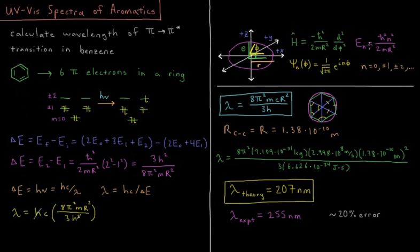And the energies of these levels were equal to Planck's constant squared times the quantum number n² over 2mr². And n, the quantum number, could equal any integer, 0, plus or minus 1, plus or minus 2, etc.